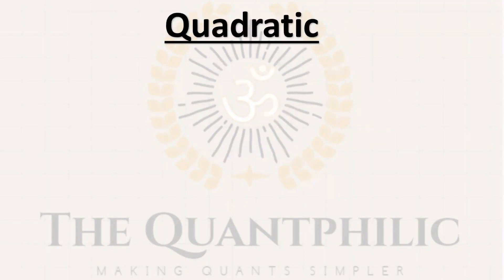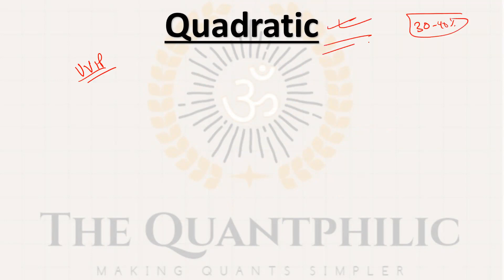Next topic is quadratic — this is a VVIP topic. Expect 30 to 40 percent of algebra questions to be from quadratic, or quadratic will be loaded in one way or another. You should be well versed with quadratic at a high level.